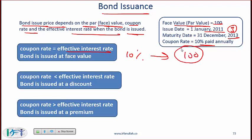On the balance sheet, what will we show? We will show a bond payable of 100 and a cash increase of 100.